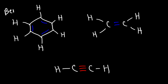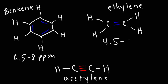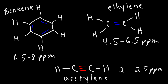Here we have benzene, ethylene, and acetylene. The chemical shift for benzene in H-NMR, looking at the protons, is between 6.5 to 8 parts per million. The chemical shift for the protons in ethylene is around 4.5 to 6.5. And the protons attached to an alkyne, like acetylene, varies between 2 and 2.5. Now, why is the chemical shift for acetylene much lower than for the protons in ethylene and benzene?